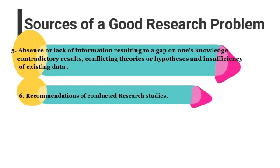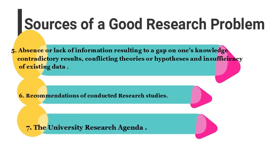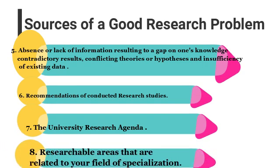Number six: recommendations of conducted research studies. Number seven: the university research agenda as provided by the university research services department. And last: researchable areas that are related to your field of specialization. For example, if your field of specialization is biological science, climate change is one among your researchable areas that is related to biological science.